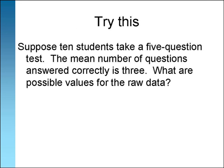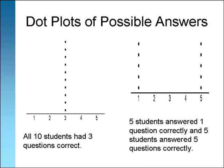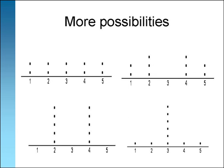Let's try an exercise to help us feel more understanding of measures of central tendency. Suppose ten students take a five question test. Our data variable is the number of questions answered correctly. The mean number of questions answered correctly is three. What are possible values for the raw data? Here are two dot plots of possible data sets with a mean of three. In the first one, all students had three questions correct. In the second one, five students had one question correct and five students had all five questions correct. Before going to the next slide, try to make four more possible dot plots. Pause the video to study this slide and make your dot plots. All of these distributions have a mean of three. You may have thought of others.